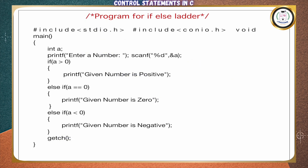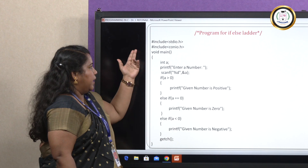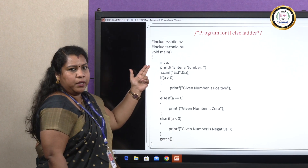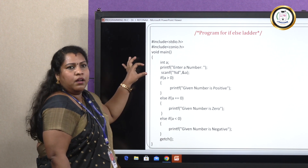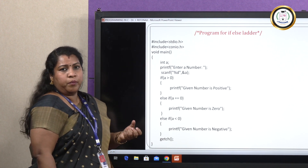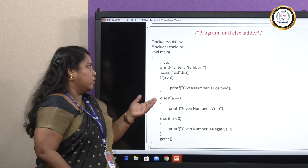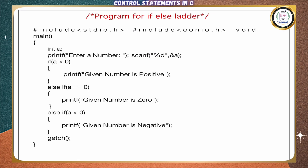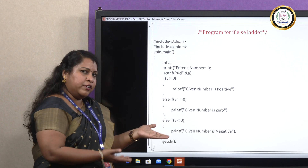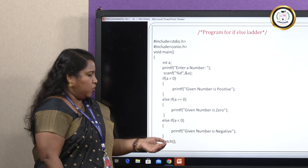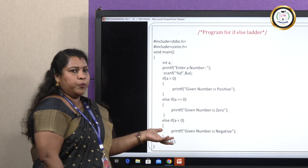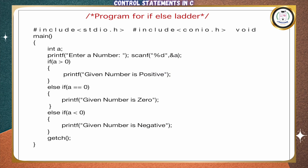Here is the program for the else-if ladder. We have the header file, main function, and declaration of variable int a. The input is taken using scanf. First we check: if a is greater than 0, we print 'the given number is positive'. Else if a equals 0, we print 'given number is 0'. Else if a is less than 0, we print 'the number is negative'. According to the matching of the inputs, the particular statement block will be executed and printed.